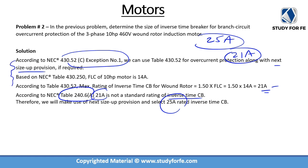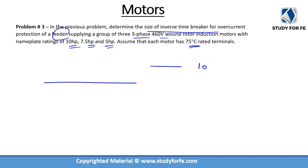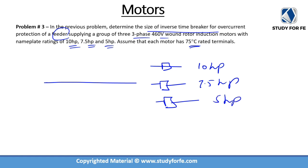You can see that we are now making use of different code sections, some within the same article and some in other articles. Problem number 3 further builds upon the previous two problems and asks us to calculate the size of an inverse time circuit breaker for overcurrent protection of the feeder supplying the group of three-phase 460V wound rotor induction motors. The difference here is that problem 2 sized the OCPD for the 10 horsepower branch circuit, whereas problem 3 is sizing the OCPD for the feeder.